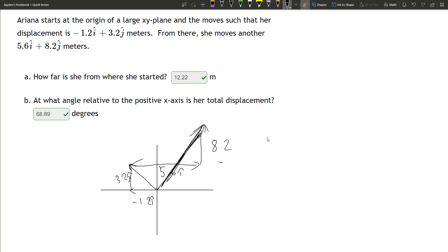The total vector is going to have negative 1.2 plus 5.6i. This value right here is going to be 4.4i. And if we add the two y values, 8.2 plus 3.2, we get 11.4.